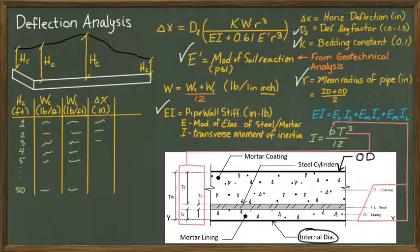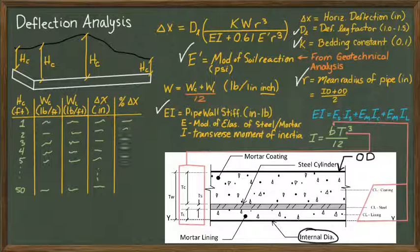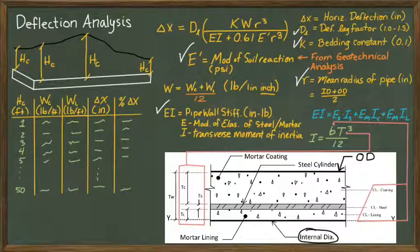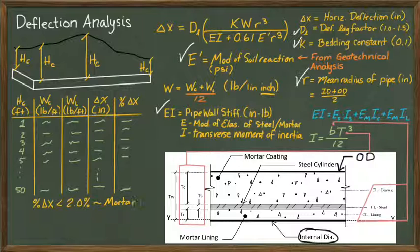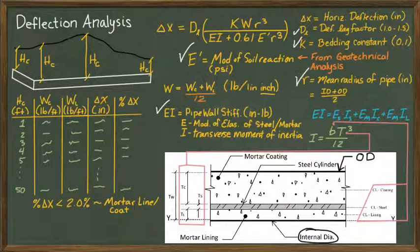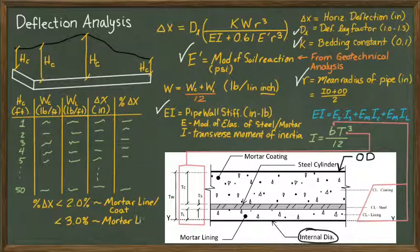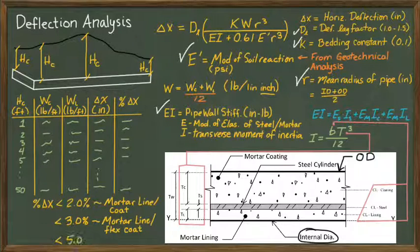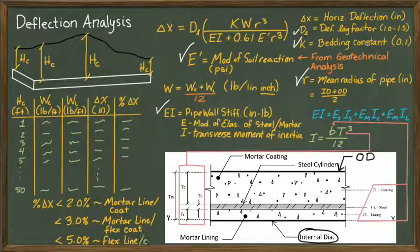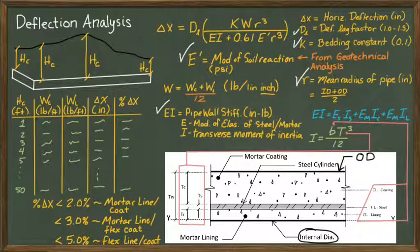This allows us to plug in the equation for the deflection at each depth, then calculate the percent deflection compared with the total diameter of the pipeline. We do this because the percent deflection must be below 2% for mortar lined and coated steel pipes, and it must be less than 3% for mortar-coated pipes with a flexible lining, and the deflection must be less than 5% for a steel pipeline with flexible lining and coating.